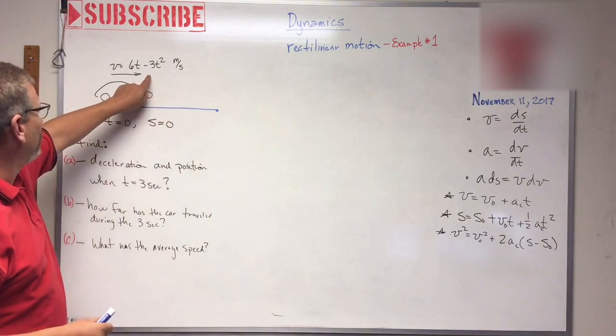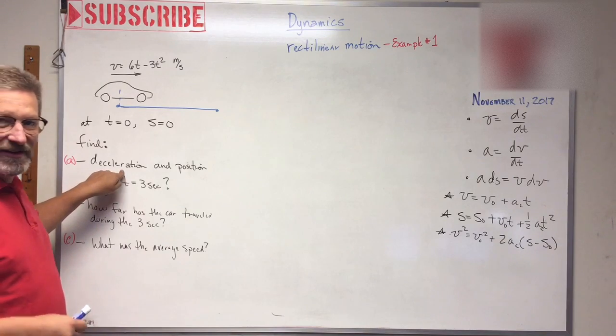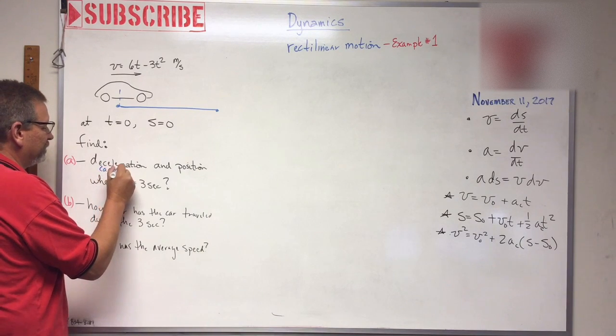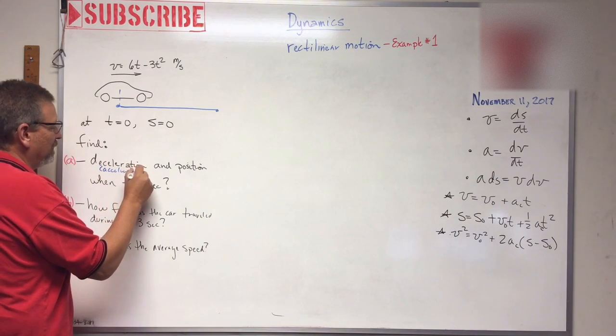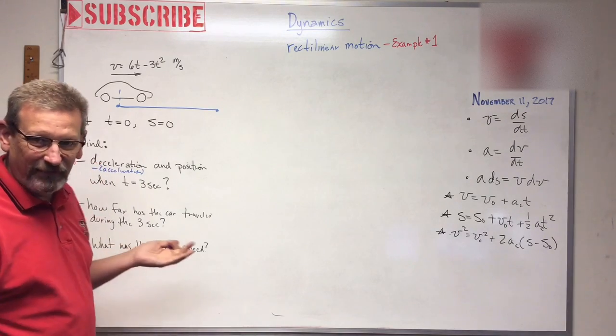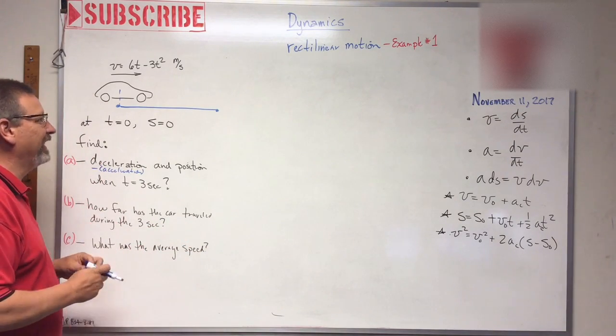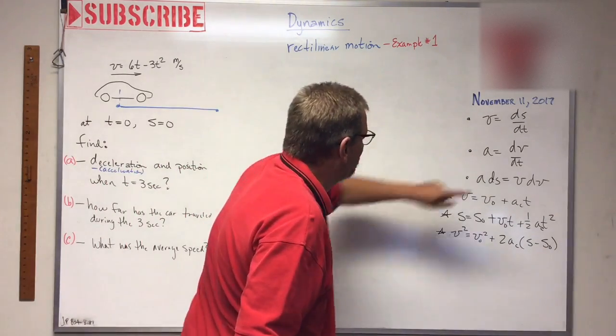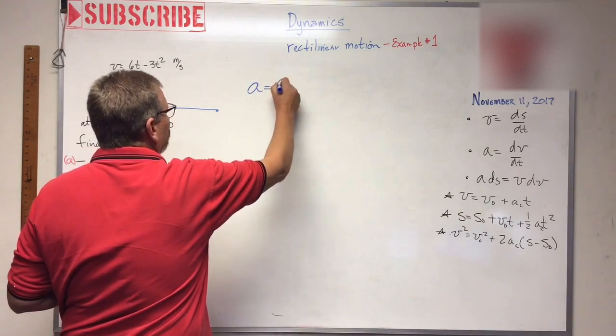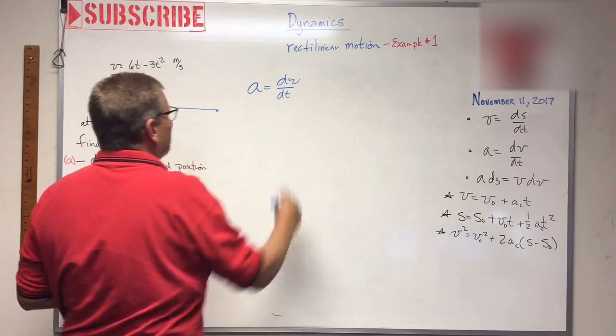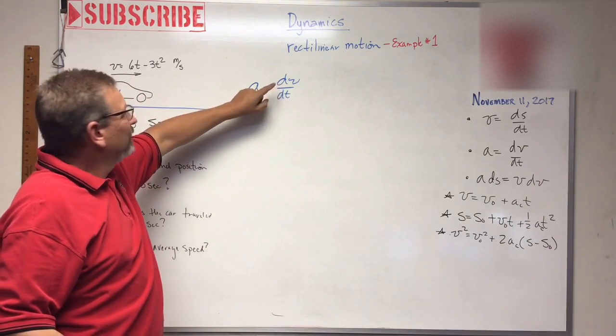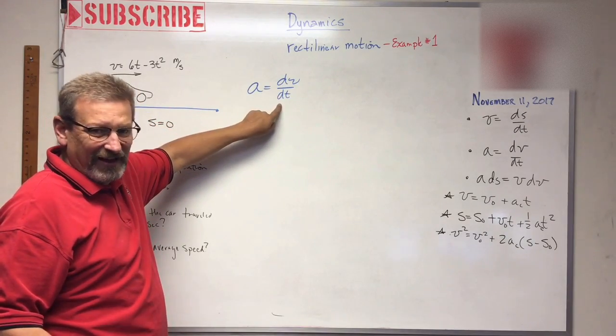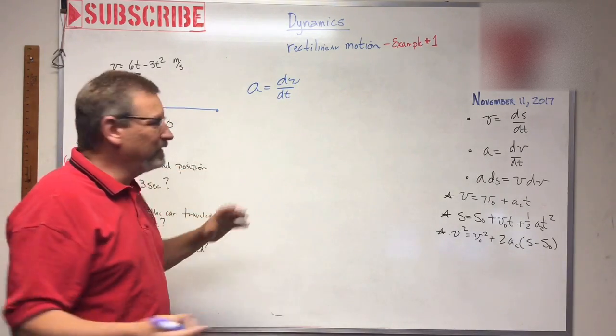So we're given this equation here. Find deceleration. Now deceleration is like negative acceleration, right? This really is acceleration. But it's probably just gonna have a negative sign in front of it. Deceleration is like negative acceleration. So let's use the acceleration equation. a is equal to dv/dt. And what is that? dv, that is the derivative of the velocity with respect to time. Do we know how to take derivatives? Of course we do.